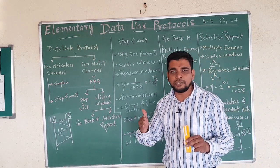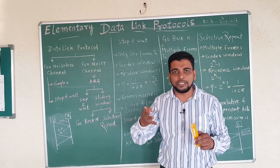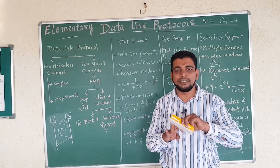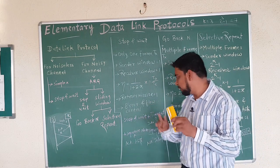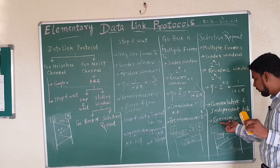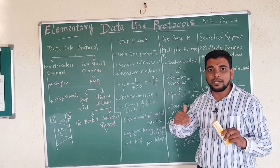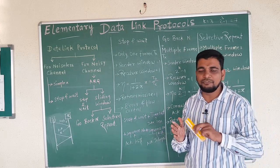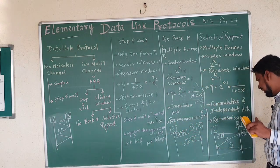Cumulative acknowledgement in Selective Repeat: all 4 frames received — acknowledgement sent for all 4. If one frame (e.g., frame 3) is not received, the receiver can send an independent acknowledgement indicating only frame 3 is missing. Both cumulative and independent acknowledgement are possible. Retransmission is selective — only the missing frame (e.g., frame 3 out of 1, 2, 3, 4) is independently retransmitted, keeping retransmission count to 1.